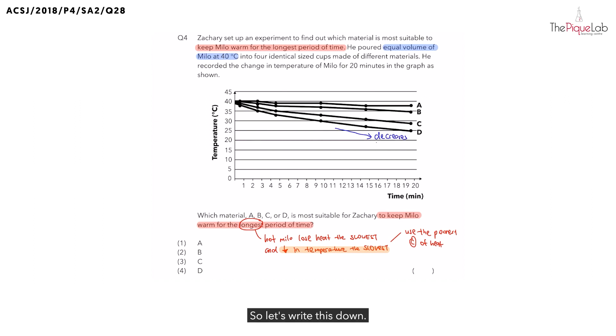So, let's write this down. And since the temperature of the hot Milo in D decreases the fastest, this tells us that's material D is the best conductor of heat. But is that what we wanted? No. In fact, we want the one that is the poorest conductor of heat, which means we should choose the one that the temperature decreases the slowest.